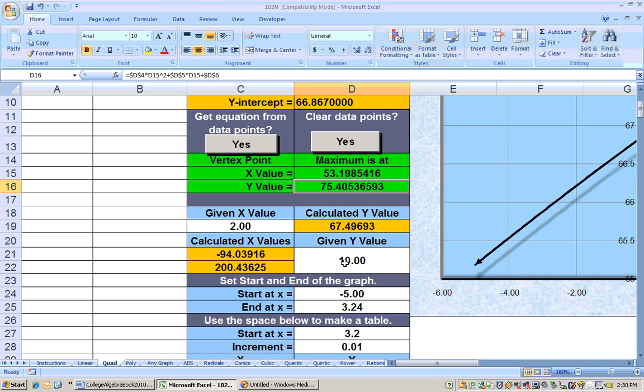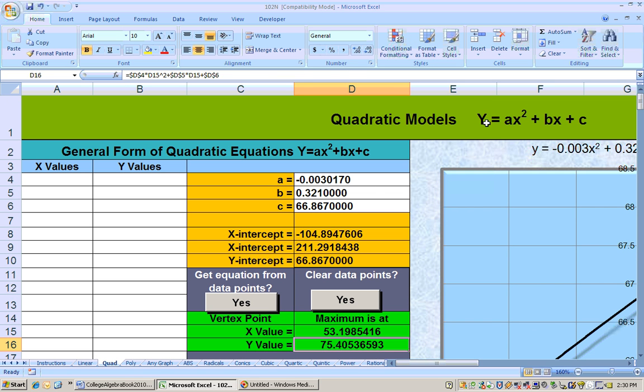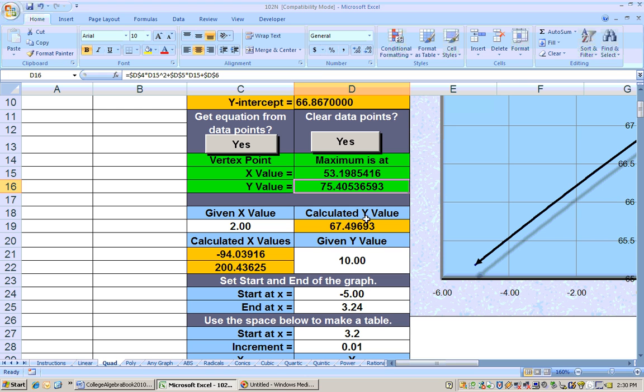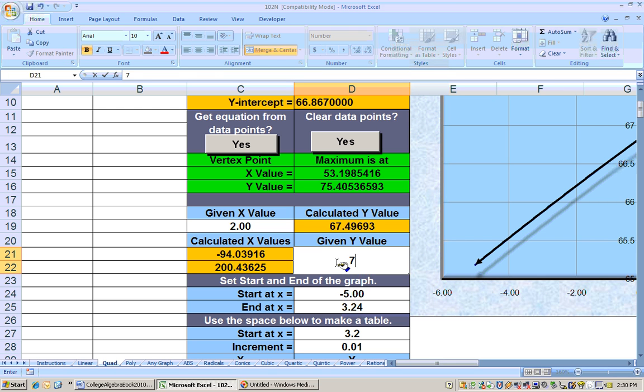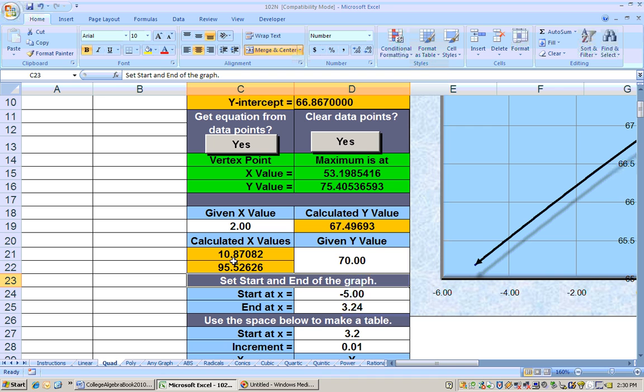Now, if you wanted to find out something more realistic, like in what years would you need to be born, so that your life expectancy would be, the average life expectancy for people born in that year would be 70 years old. Well, I'm given a life expectancy. I'm given a y value. That's where l was over here as the dependent variable. So I would type in 70 for the y, and I get two answers, 10.87 years after 1950 and also 95.52 years after 1970.